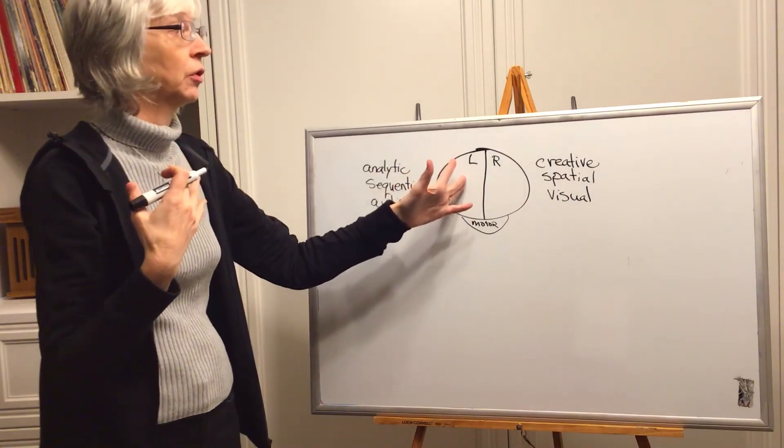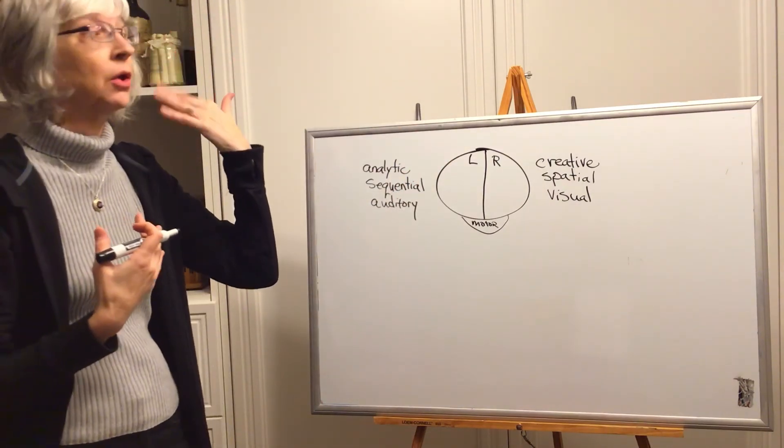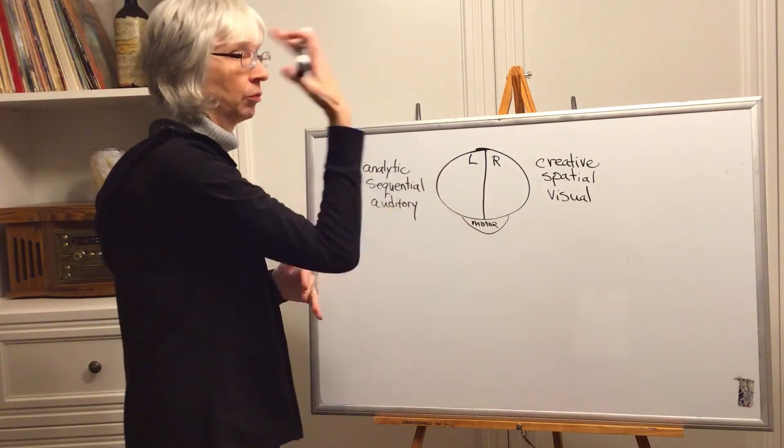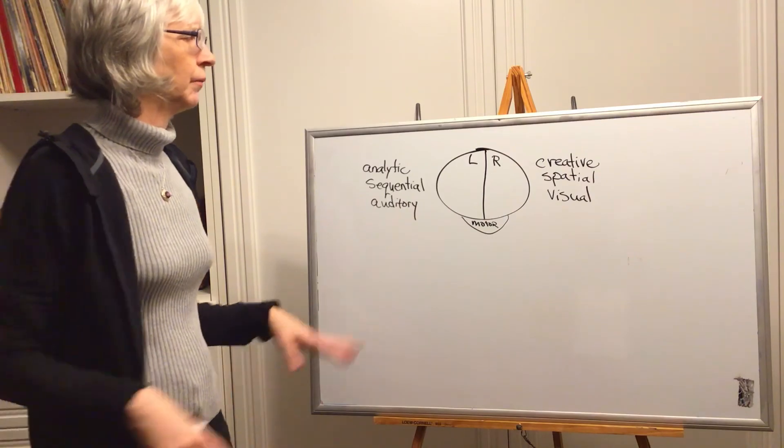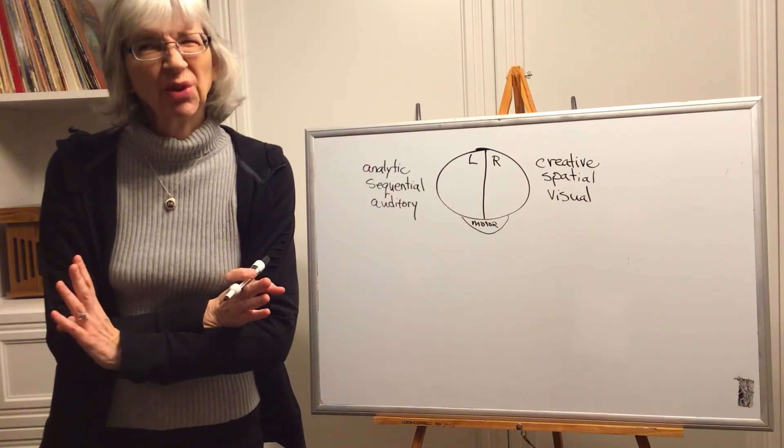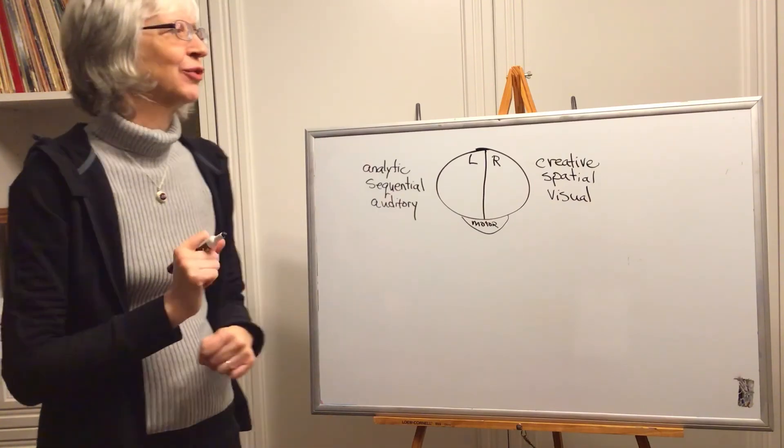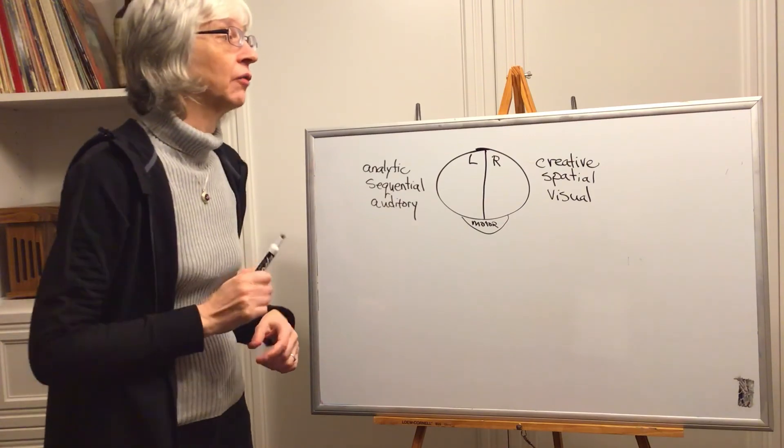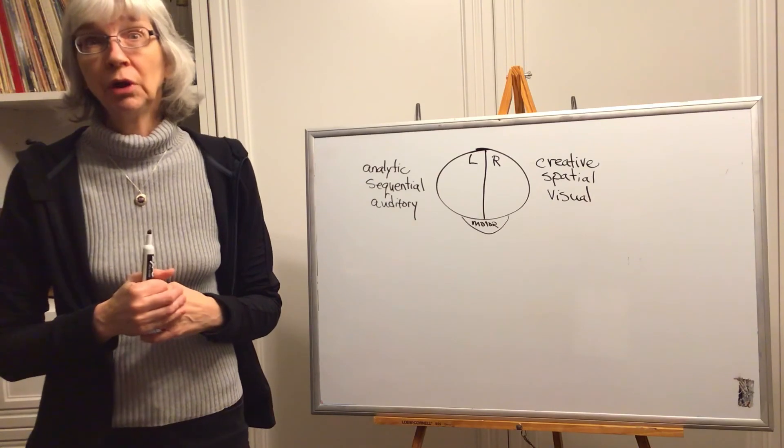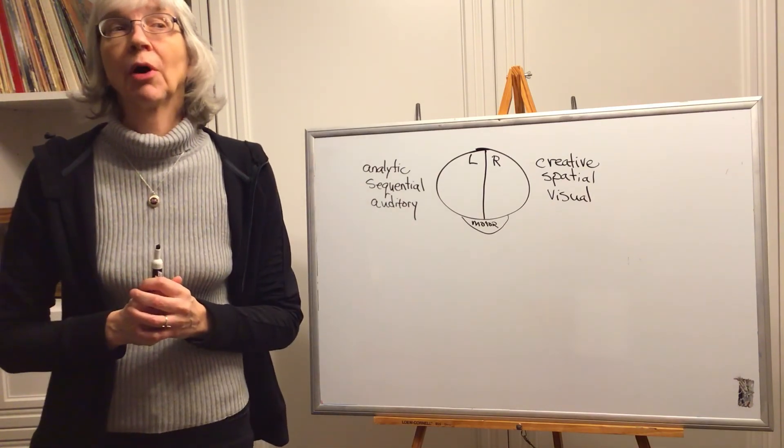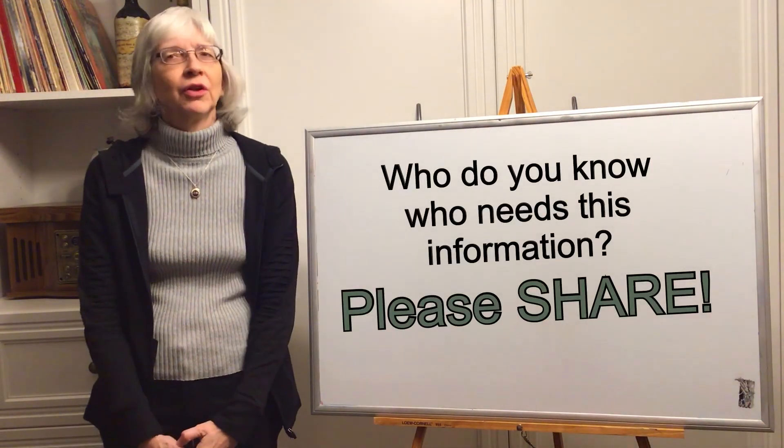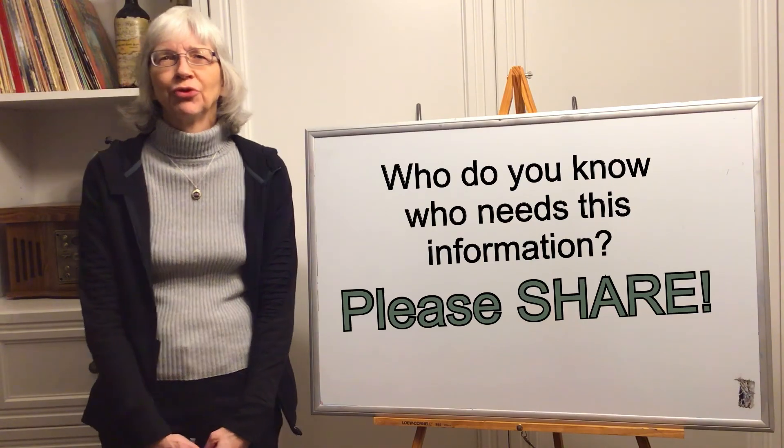And then just to throw one more caveat into it, some people their hemispheres are reversed. So just to throw that in there. But anyway, that's kind of a quick overview, very simplistic way of how kids learn. And in some of the next videos we're going to talk about what goes wrong. Thanks. If you like what I'm doing, hit the thumbs up. Really appreciate it. Thanks so much.